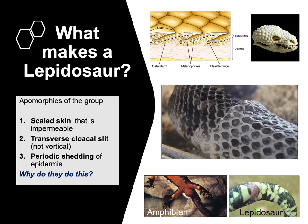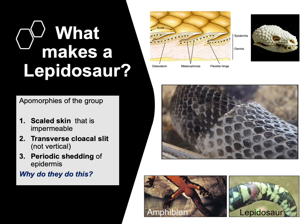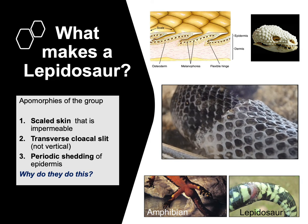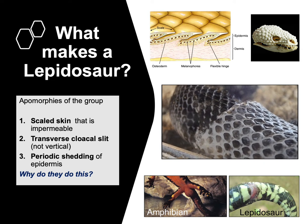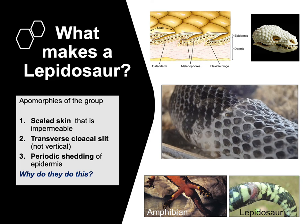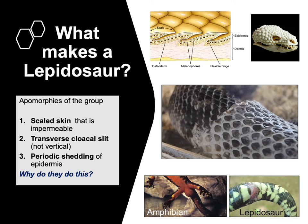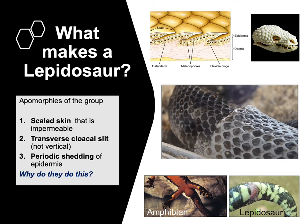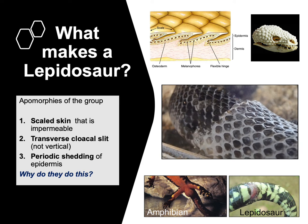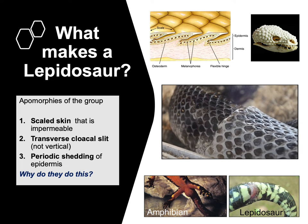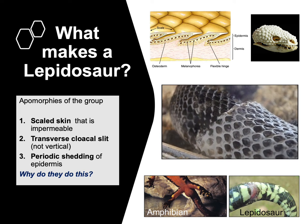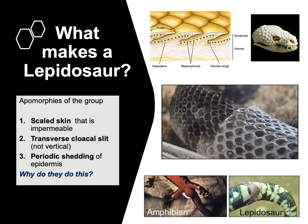The third defining trait — the third apomorphy of a lepidosaur — is that they shed their epidermis in a periodic fashion. We all know about snake shedding, but lizards shed too; it just doesn't come out as one big piece like snakes, so it's less well known. Why do these animals have to shed?